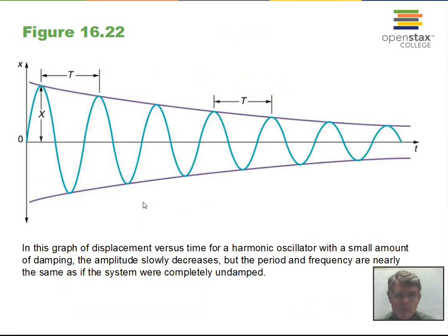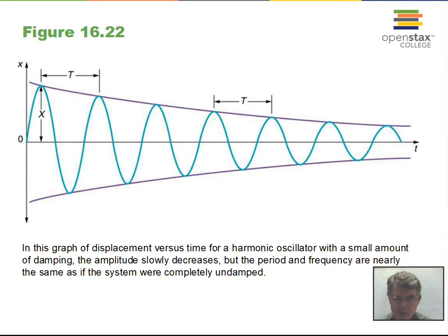What about damped simple harmonic motion? In simple harmonic motion without friction, the spring goes back and forth to the same amplitude indefinitely. The energy given to the system — as the mass is pulled back, giving the spring potential energy of ½kx² (one half the force constant times the square of the displacement) — stays constant.